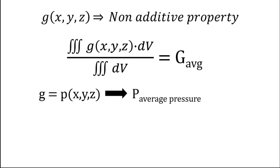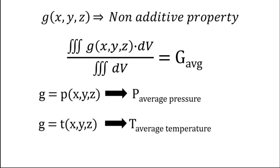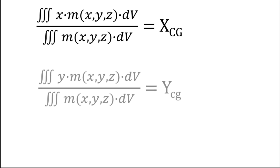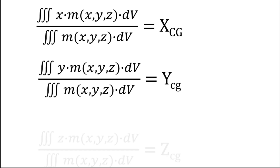A good example is if g is a pressure distribution function — we can get the average pressure of the volume. Similarly, if g is a temperature distribution function, we get the average temperature.